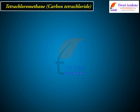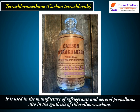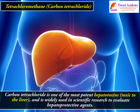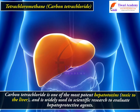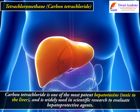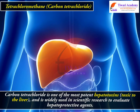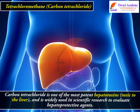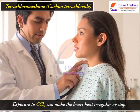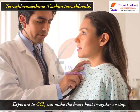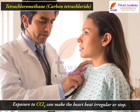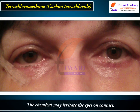Tetrachloromethane, or carbon tetrachloride (CCl4), is used in the manufacture of refrigerants and aerosol propellants, and also in the synthesis of chlorofluorocarbons. Carbon tetrachloride is one of the most potent hepatotoxins — toxic to the liver — and is widely used in scientific research to evaluate hepatoprotective agents. Exposure to CCl4 can make the heartbeat irregular or stop, and the chemical may irritate the eyes on contact.